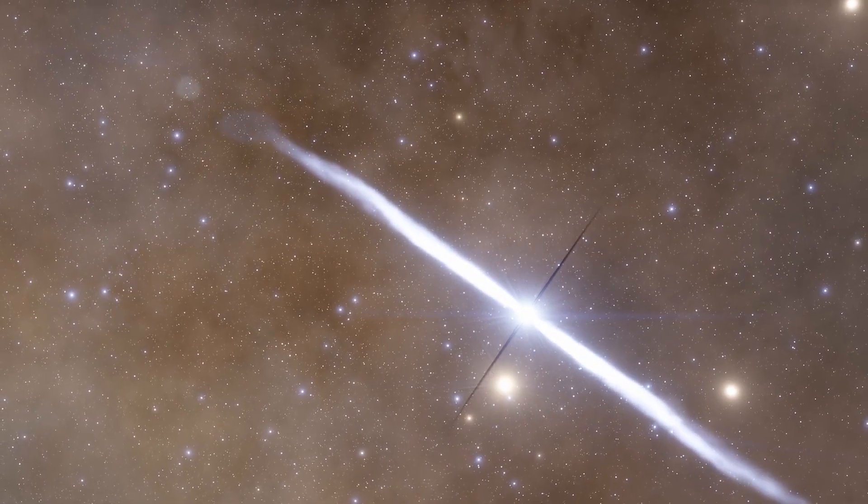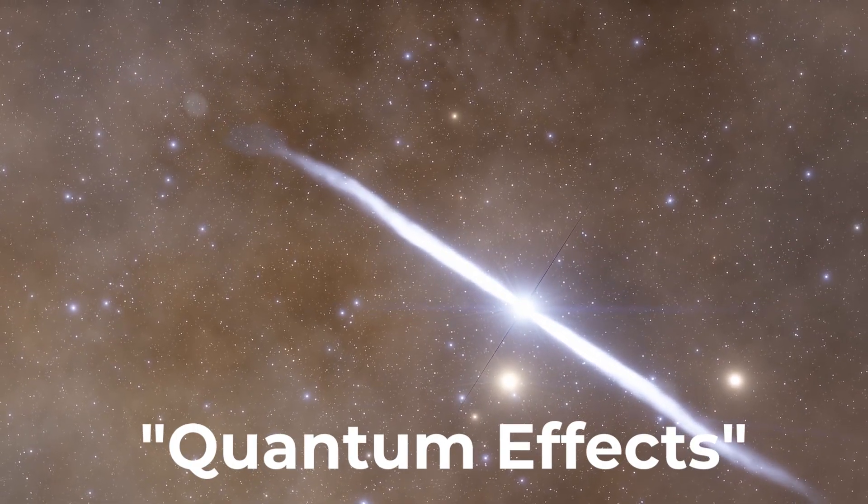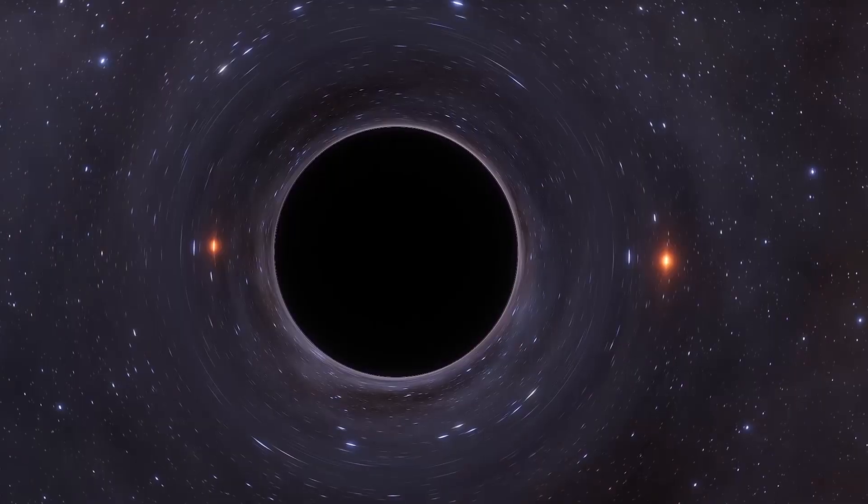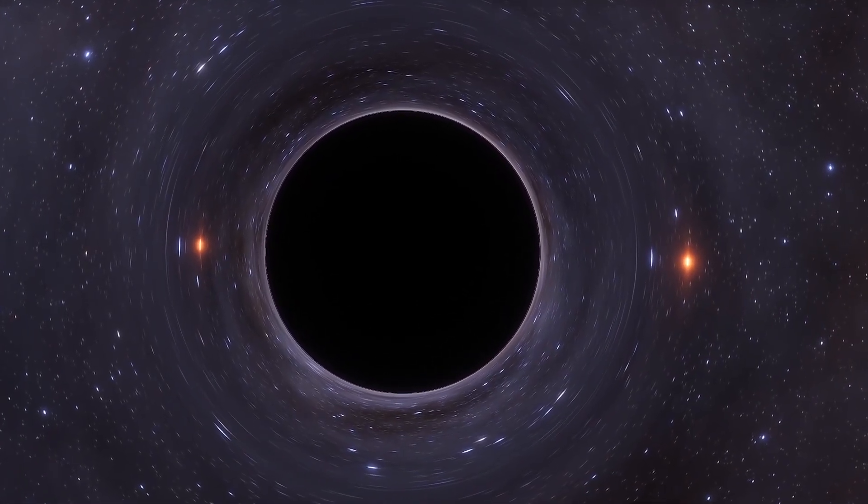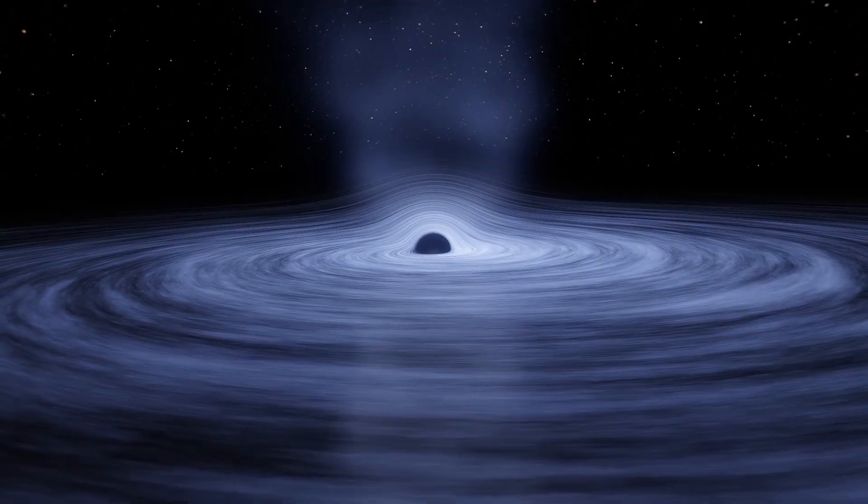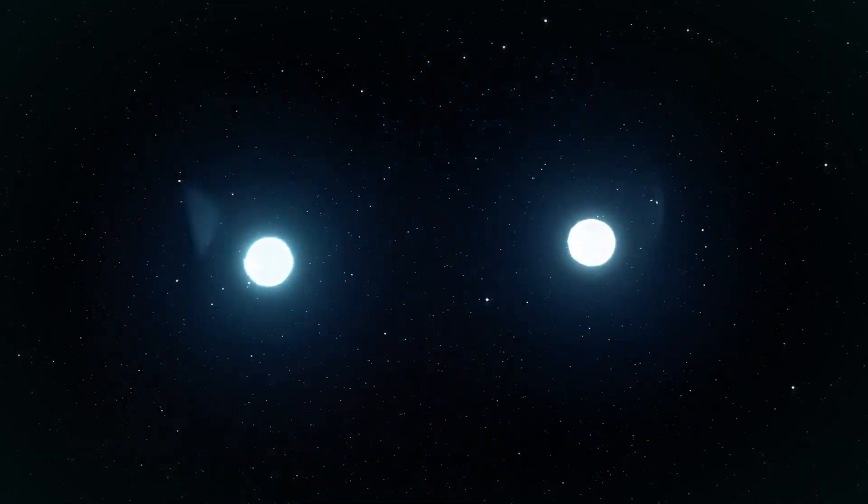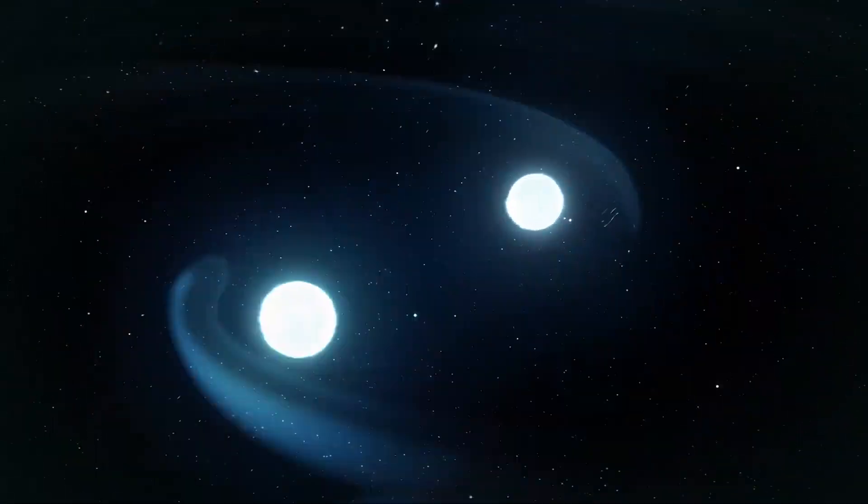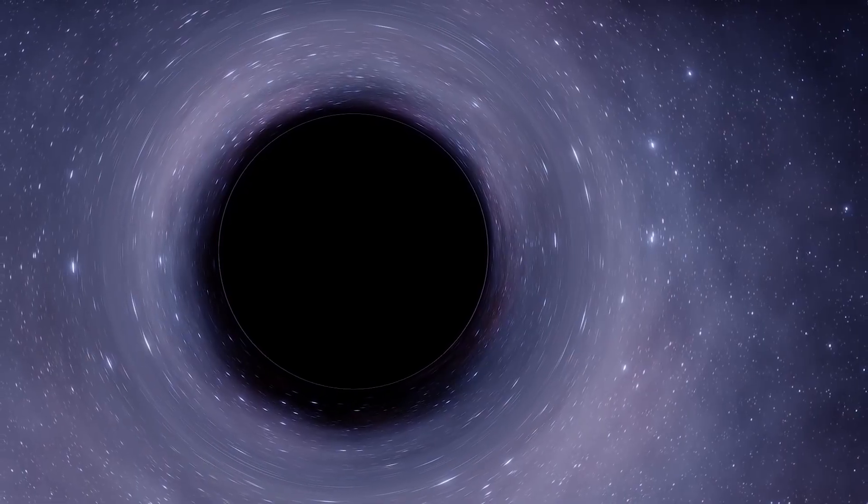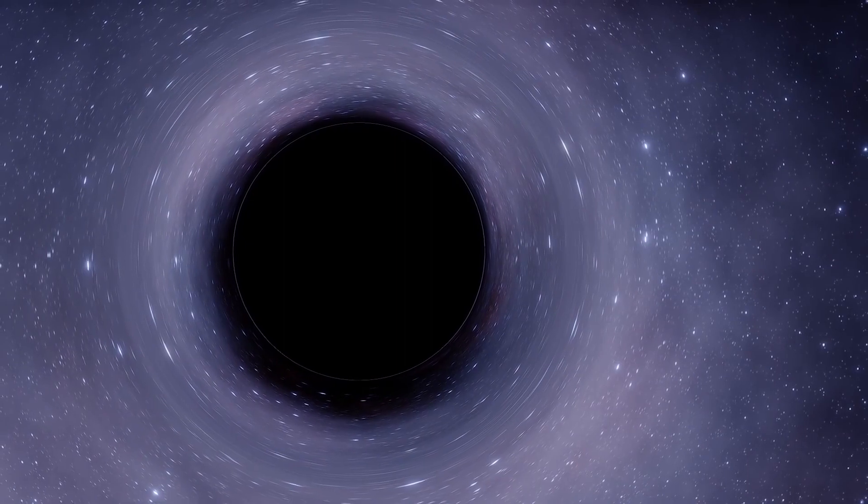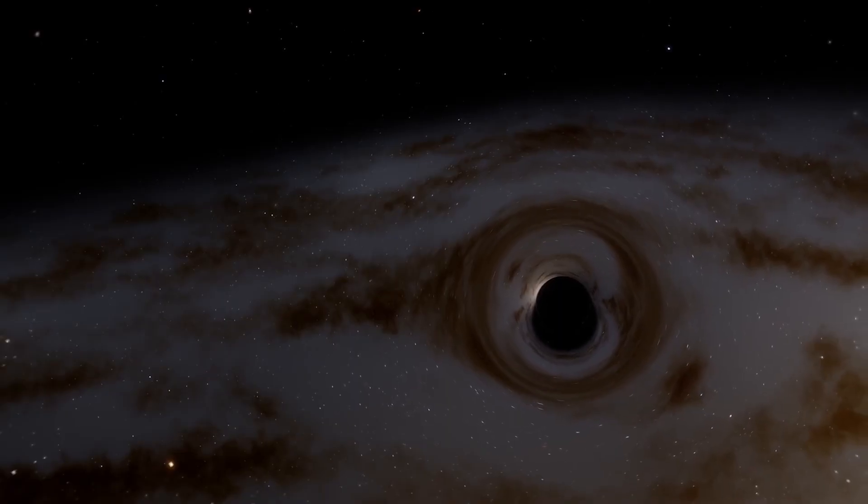Hawking radiation is produced by quantum effects near the event horizon of a black hole. The energy of the radiation depends on how heavy and fast the particle is, how many particles are produced and in what way, and how much time has passed since it was emitted. Moreover, Hawking radiation doesn't actually destroy a black hole, it just makes it smaller over time.